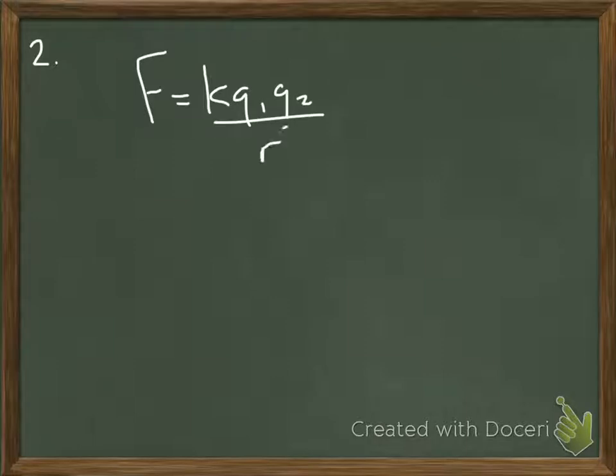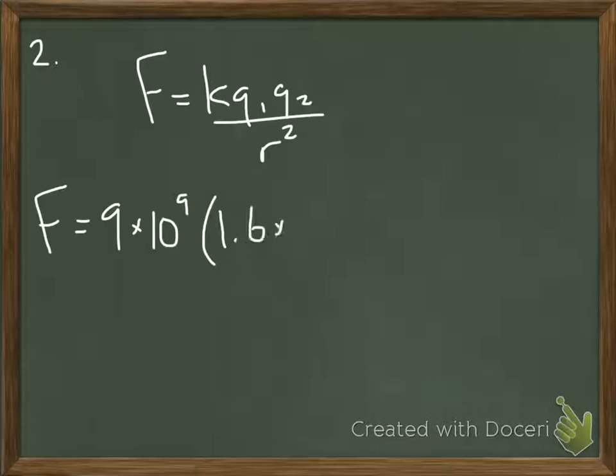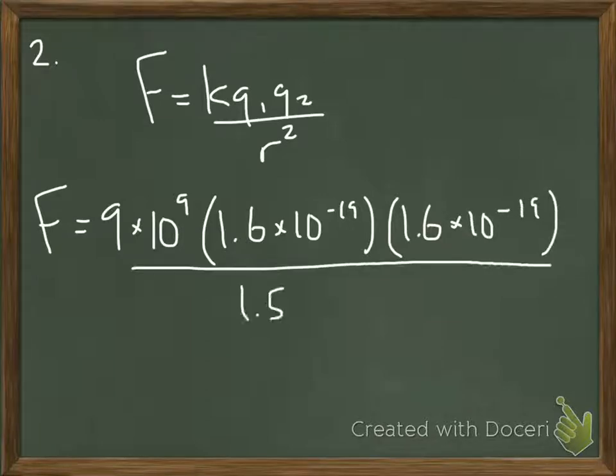Here we have to use our electric force equation, KQQ over R squared. Don't forget that K is a constant, it's always 9 times 10 to the 9th. And then in this case, both of our charges are identical, because it says we have two electrons.